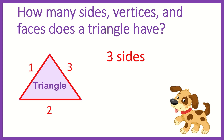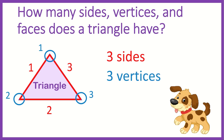A vertex is where two sides meet and it makes an angle. Let's count how many vertices a triangle has together. One, two, three. A triangle has three vertices.